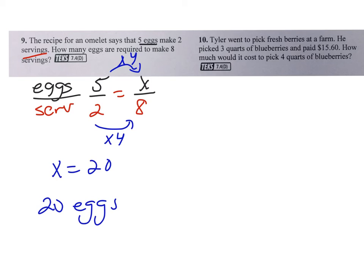Number 10, same exact strategy. Find out what two things you're comparing, and that is quarts. So I'm going to put quarts on one side, and below it, I will put the dollar sign. So we have $15.60, and that was for 3 quarts. Now they want to know how much 4 quarts is, and the dollar sign is my question.